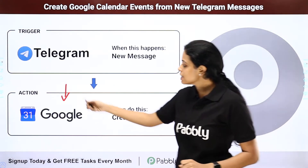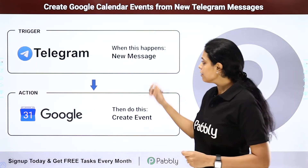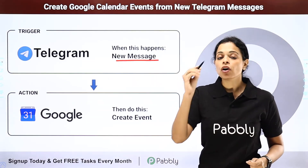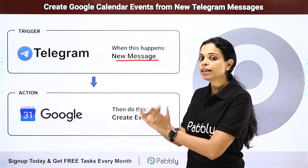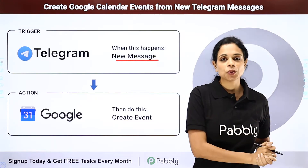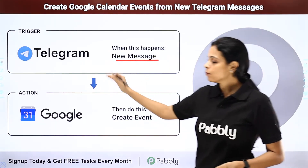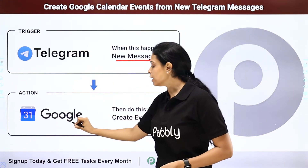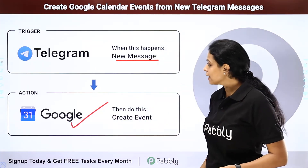Next is Telegram and Google Calendar. Just like Discord, every time there is a new message on Telegram, automatically with the information in that message, an event would be created on Google Calendar. Again you can integrate them with Pably Connect software, where the trigger application would be Telegram and the action application would be Google Calendar.